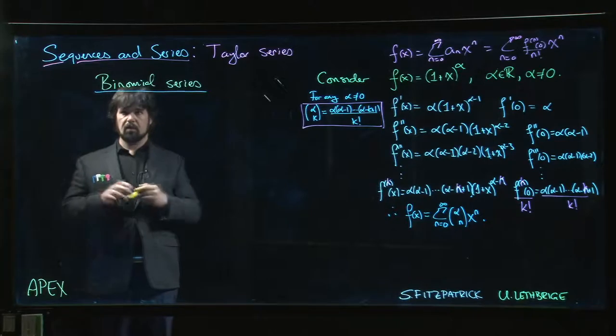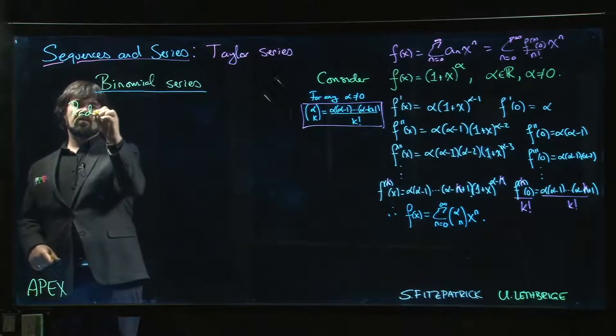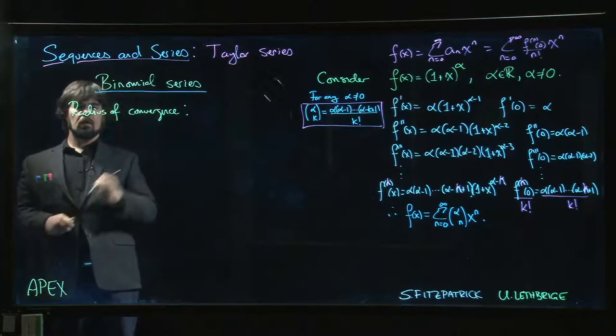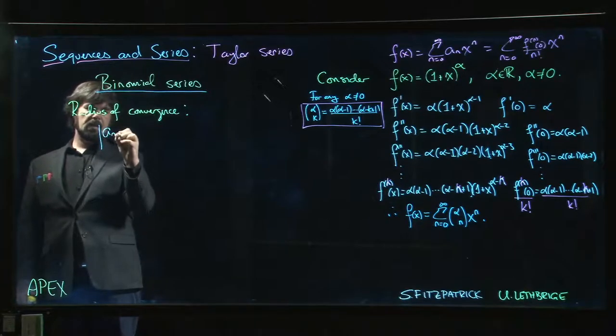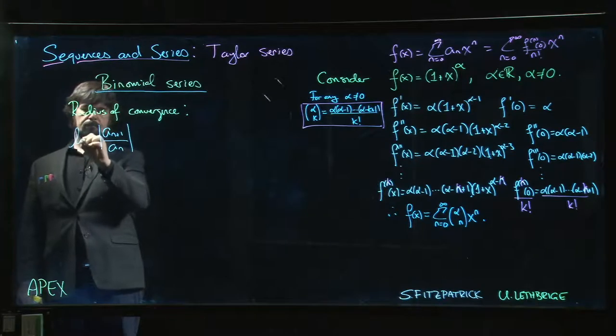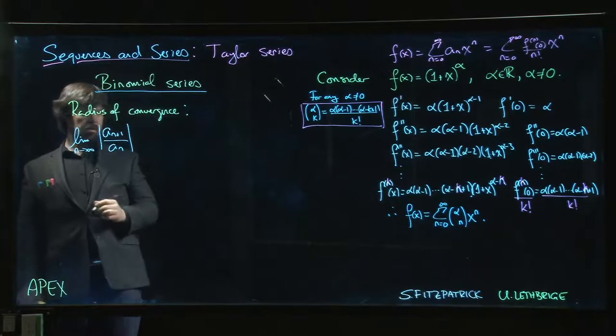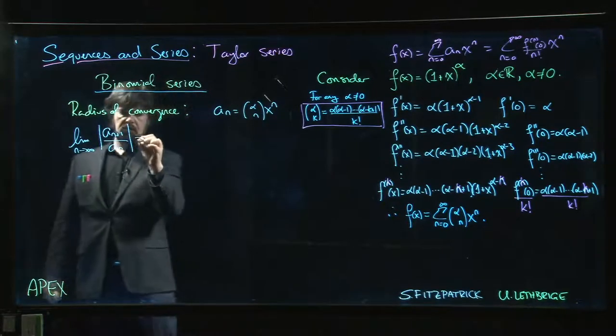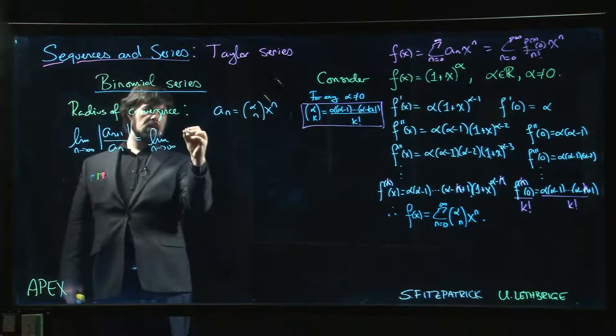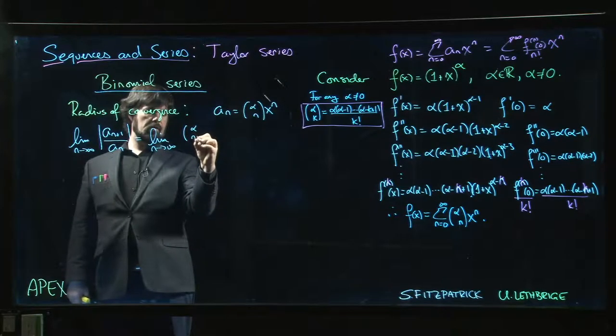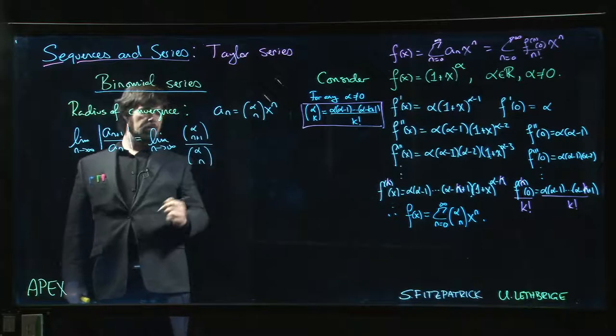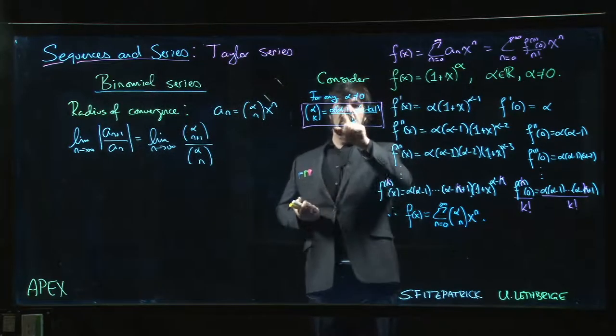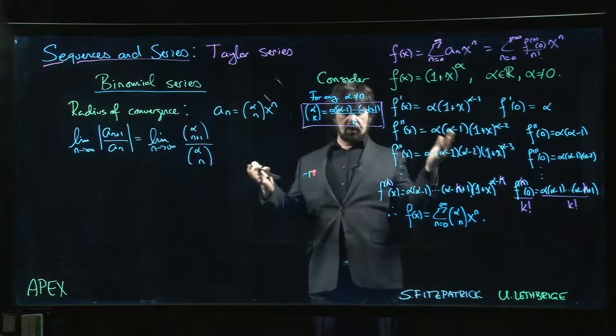There are different cases that you need to consider and some of them can get slightly annoying, so maybe we skip over that. What about the radius of convergence? What is the radius of convergence? Let's take a look. We're going to take the absolute value of a_{n+1} over a_n, take the limit as n goes to infinity, where our a_n is alpha choose n times x to the n. So what we get here is the limit as n goes to infinity of alpha choose n+1 divided by alpha choose n.